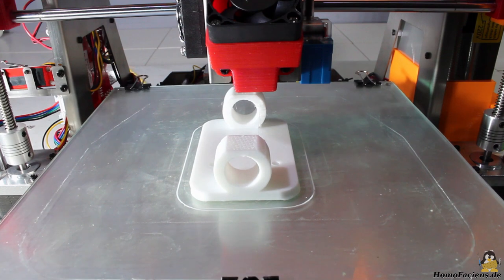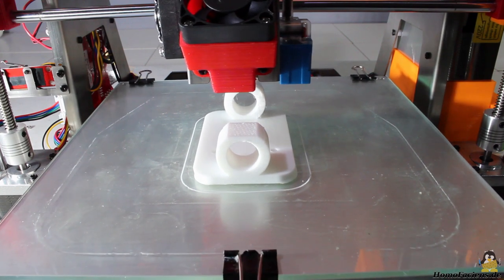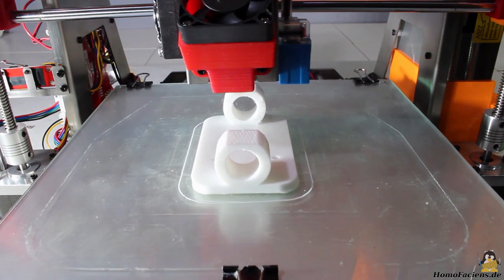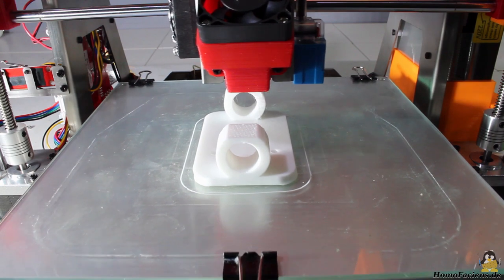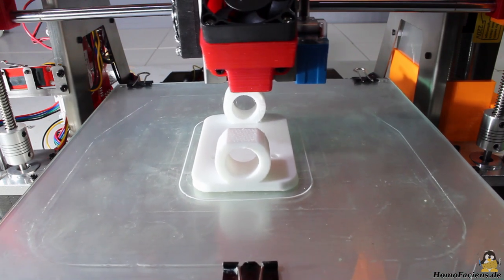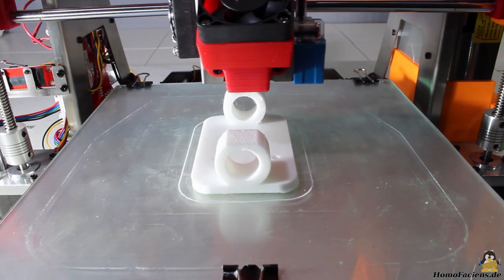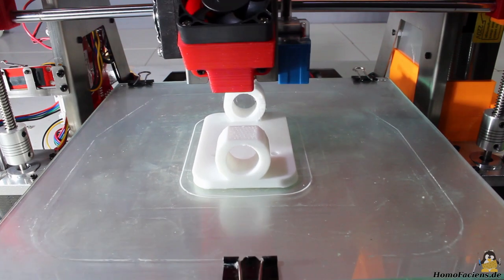For my first tests I have created a simple pen mount using the Zonestar in printer mode. The material I am using is PLA. The layer height is set to 0.2mm and the print was finished after approximately 4 hours.